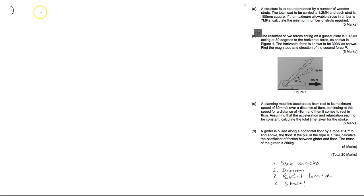Question one says a structure is to be underpinned by a number of wooden struts. The total load is 1.2 mega newtons — that's a force — and each strut is 100 millimetres square. Force and area suggests stress; stress is force divided by area. If the maximum allowable stress in the timber is 7 mega pascals, calculate the minimum number of struts required.